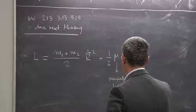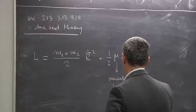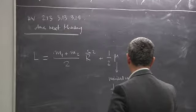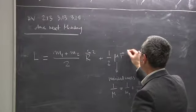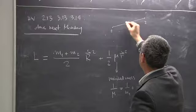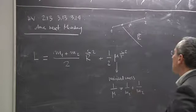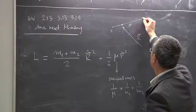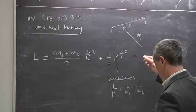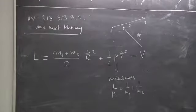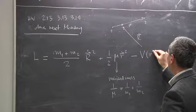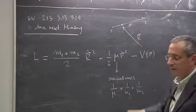The reduced mass mu is defined by one over mu equals one over m1 plus one over m2. The velocity is taken between the two points, one and two, with position r, and the center of mass position is capital R. Because it's a central force problem, the potential can only depend on the relative distance little r.